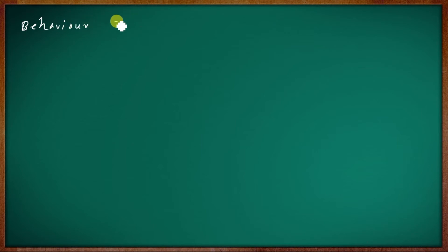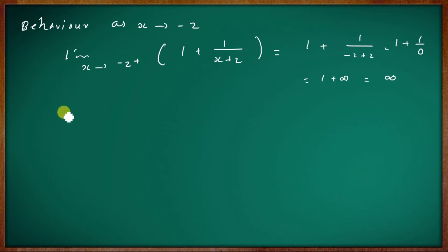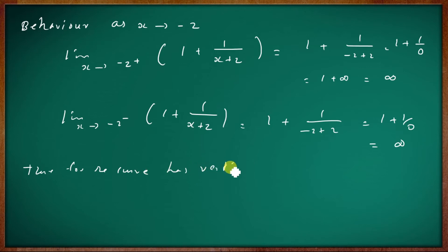For the vertical asymptote, we examine behavior as x tends to minus 2. The limit as x tends to minus 2 from the right of 1 plus 1 by x plus 2 equals 1 plus 1 by 0 equals infinity. The limit as x tends to minus 2 from the left of 1 plus 1 by x plus 2 equals 1 plus 1 by 0 equals infinity. Therefore, the curve has a vertical asymptote and it is the line x equal to minus 2.